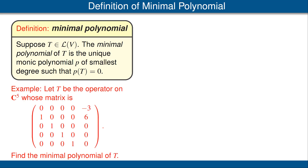Let's look at an example. Suppose T is the operator on C⁵ whose matrix with respect to the standard basis is the matrix shown here. Your task is to find the minimal polynomial of T. You should pause the video to figure this out. The best way is to compute powers of this matrix — starting with the 0th power (the identity), then the first, second, third power, and so on — until you see an obvious dependence relationship. That will give you the minimal polynomial.